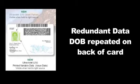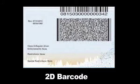Redundant data: the date of birth is repeated on the back of the card. 2D barcode: a two-dimensional barcode on the back contains demographic data from the front of the card, making duplication of the document more difficult.